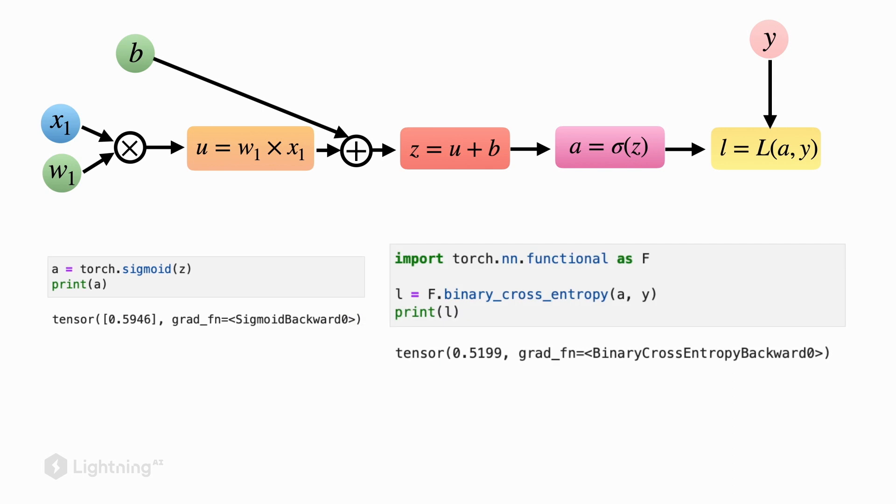Next, let's compute the loss of the logistic regression model. As you may recall from an earlier video, the loss of the logistic regression model is sometimes called binary cross entropy, and it's also the name of the function that we use in PyTorch. In this case, the output value of the loss is 0.5199.